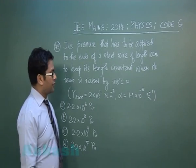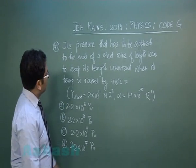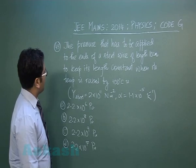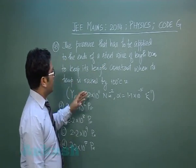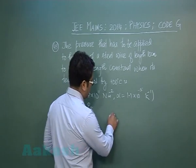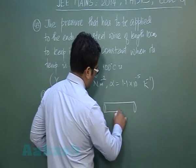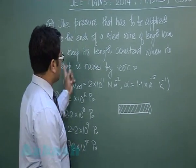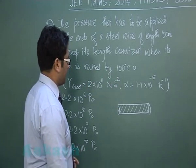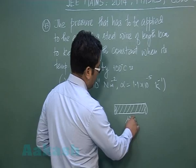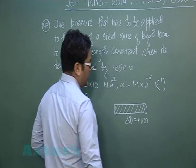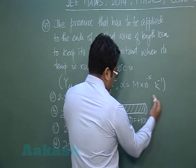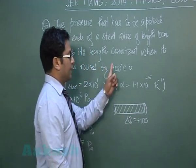Question number 43 is from heat, specifically from thermal expansion — more precisely thermal stress and strain. The question: what pressure has to be applied to the ends of a steel wire of length 10 cm to keep its length constant when its temperature is raised by 100 degrees centigrade? So the temperature has been raised by 100 degrees, and if left free the wire would expand; we need to calculate the pressure required to keep the length constant.